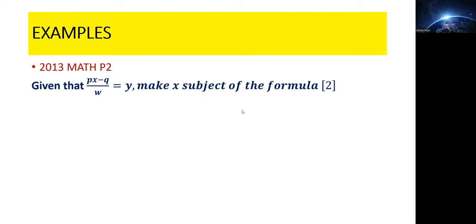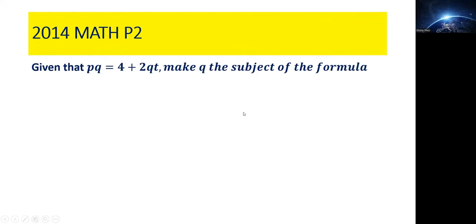Let's look at another example. This is a 2014 math paper 2 question. Given that pq is equal to 4 plus 2qt, make q the subject of the formula. I'll write the equation: pq equals 4 plus 2qt.